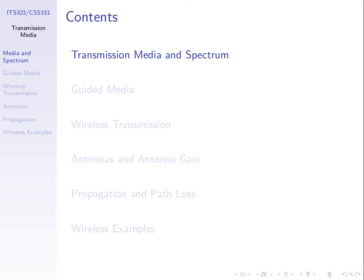Then we'll look at different media, starting with guided media — guided means wired — where signals are guided through some conductor or material. We'll give three examples of that. In the next lecture we'll look at wireless or unguided media, including concepts like antennas and how much signal we lose over distance. Today we'll cover spectrum and guided media.